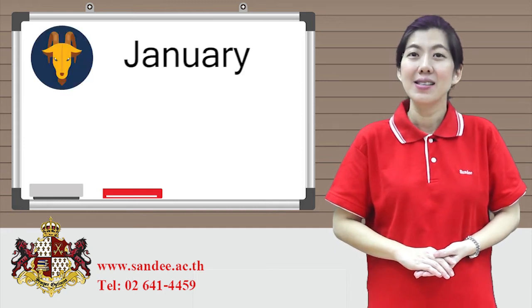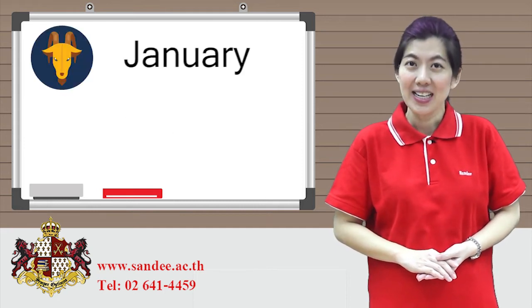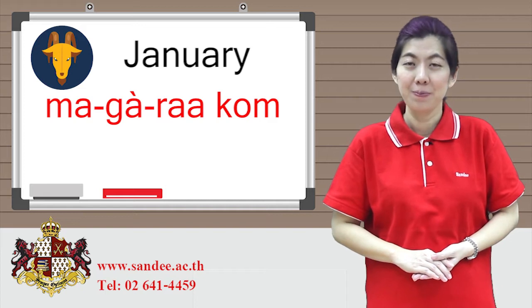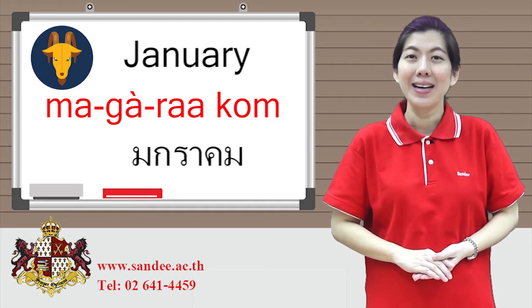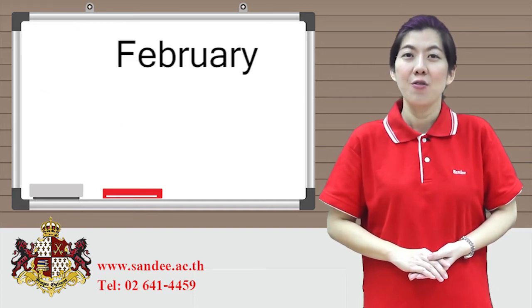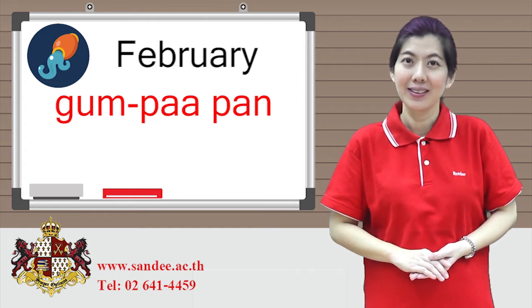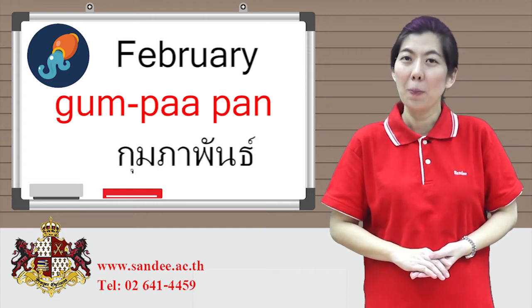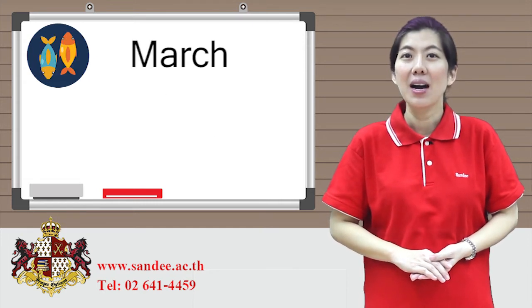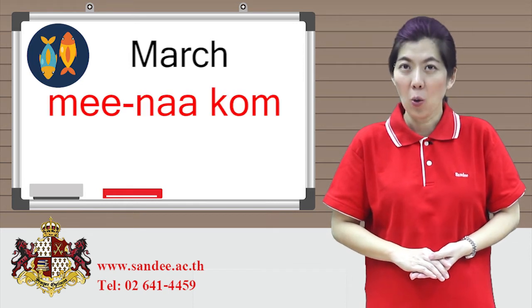Let's start with January — Makarakom. February — Glimpapand. March — Mienakom.